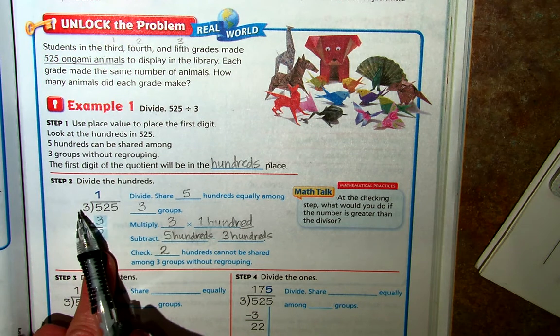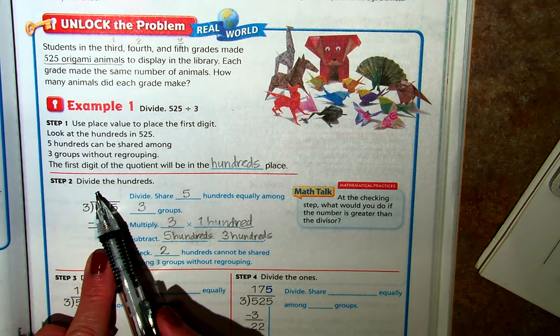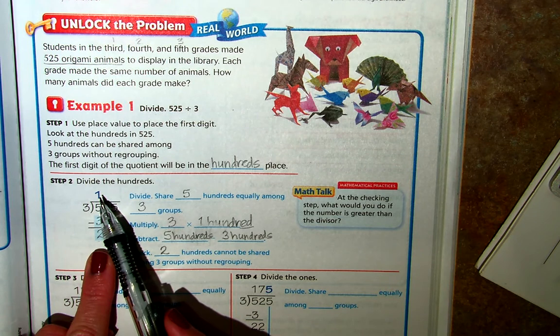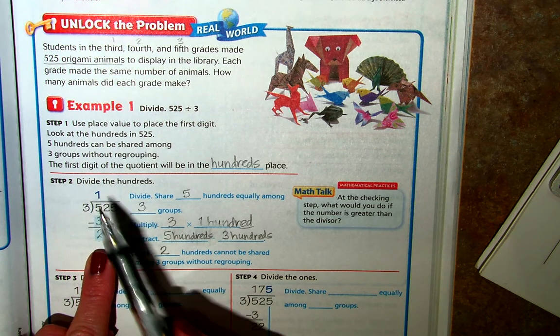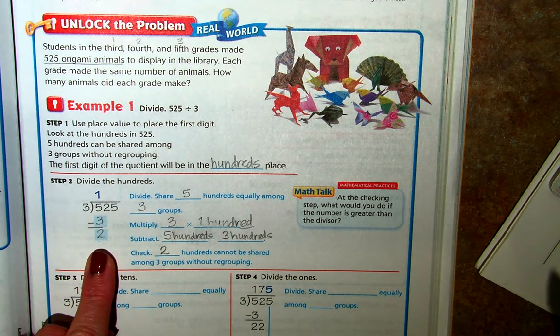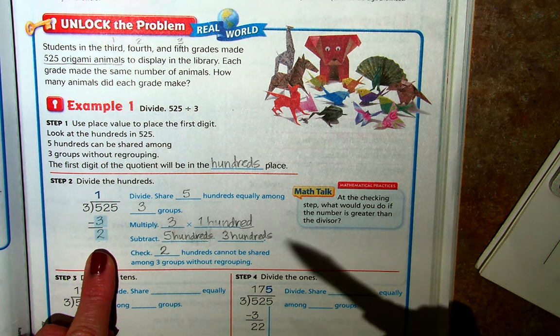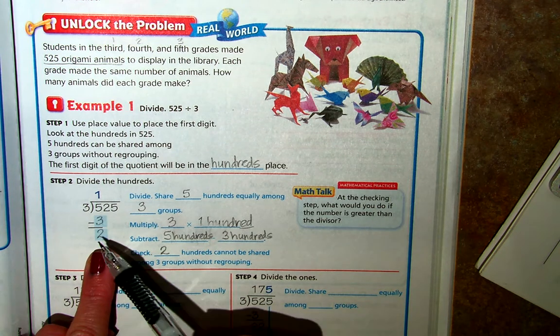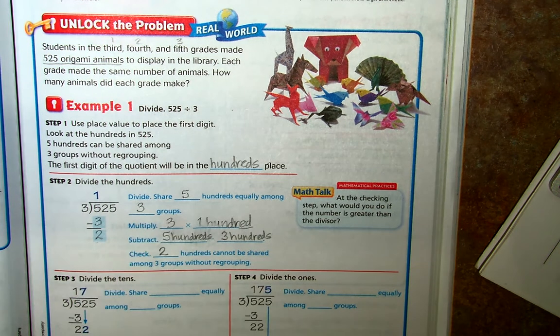Then that would mean we would need to raise our quotient. Our quotient would need to start with a 2. We might move up to a 2 there and see if that gets us to a lower number here than our divisor. I hope that makes sense.